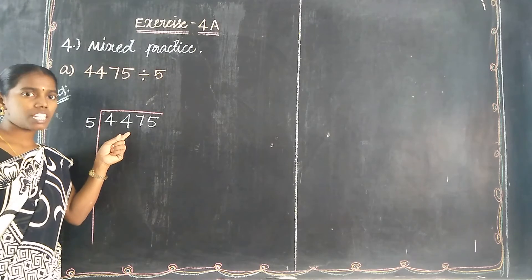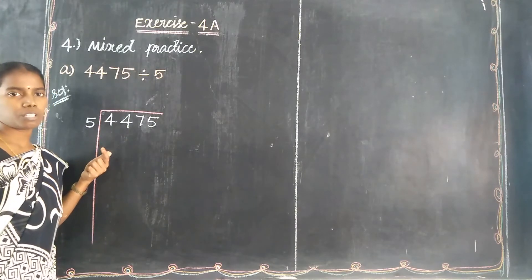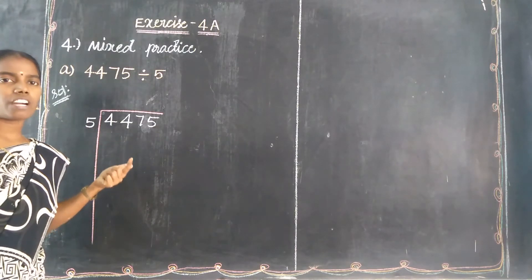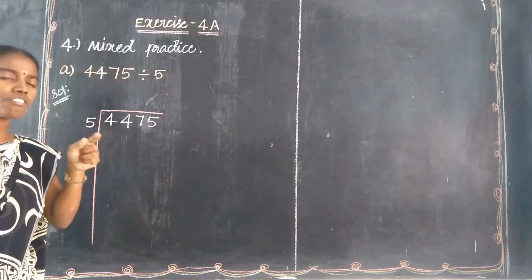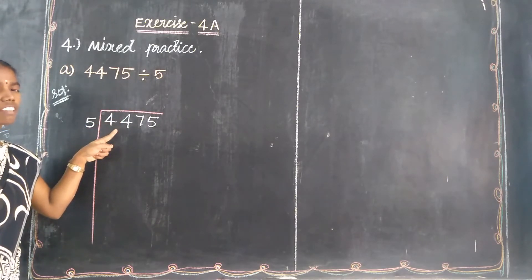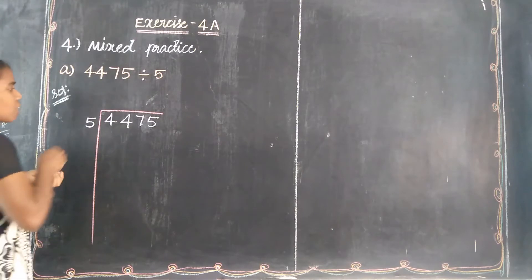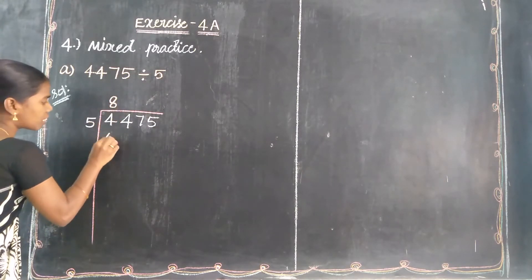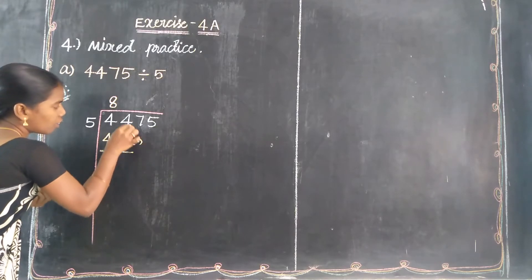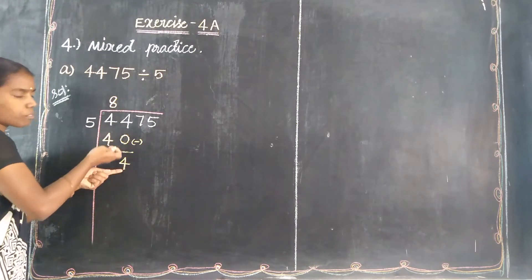So the nearly value: 8 × 5 = 40. Subtract: 44 minus 40 = 4. The remainder is 4. Then bring down the next digit, which is 7, so the number becomes 47. Same concept — check if 47 is divisible by 5.